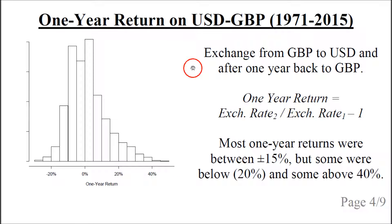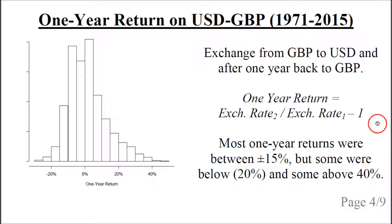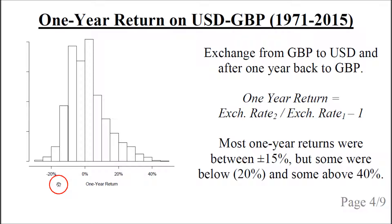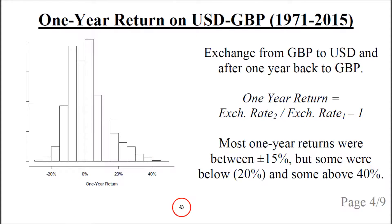Now consider the one-year returns. If we exchange from British pound to US dollar and after one year exchange back to British pound, the one-year return is calculated as the exchange rate for the second year divided by the exchange rate for the first year, minus one. Doing that for all exchange rates in the period 1971 to 2015 and making a histogram, we can see that most one-year returns were between minus 15 and plus 15%, though some were lower than minus 20% and some higher than plus 40%.